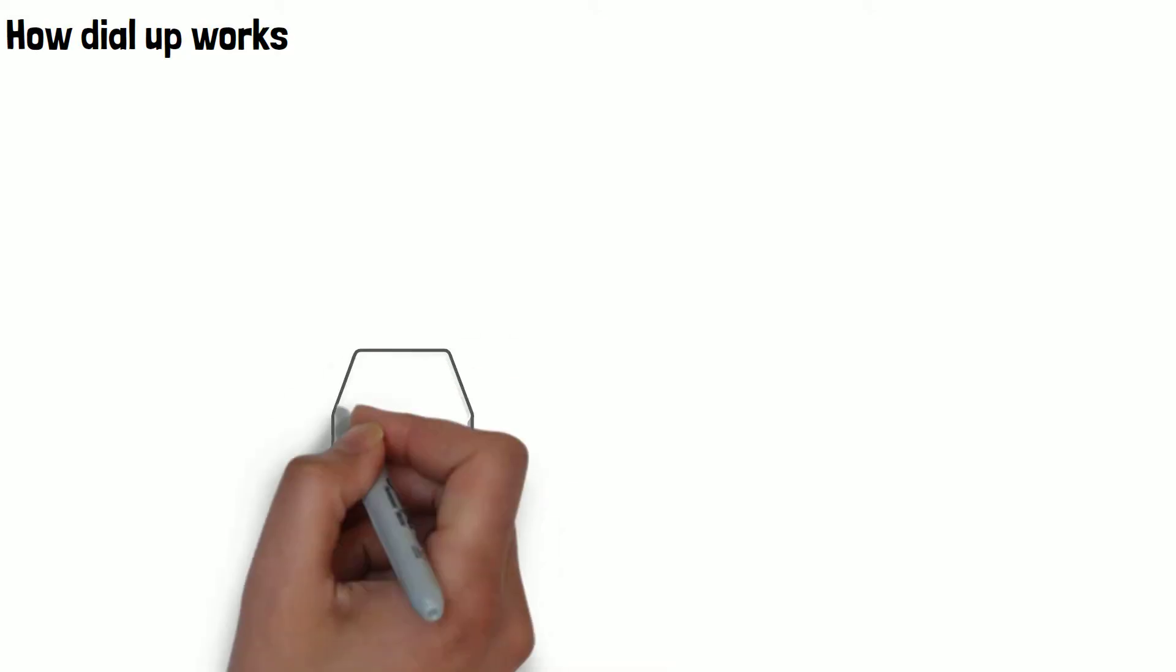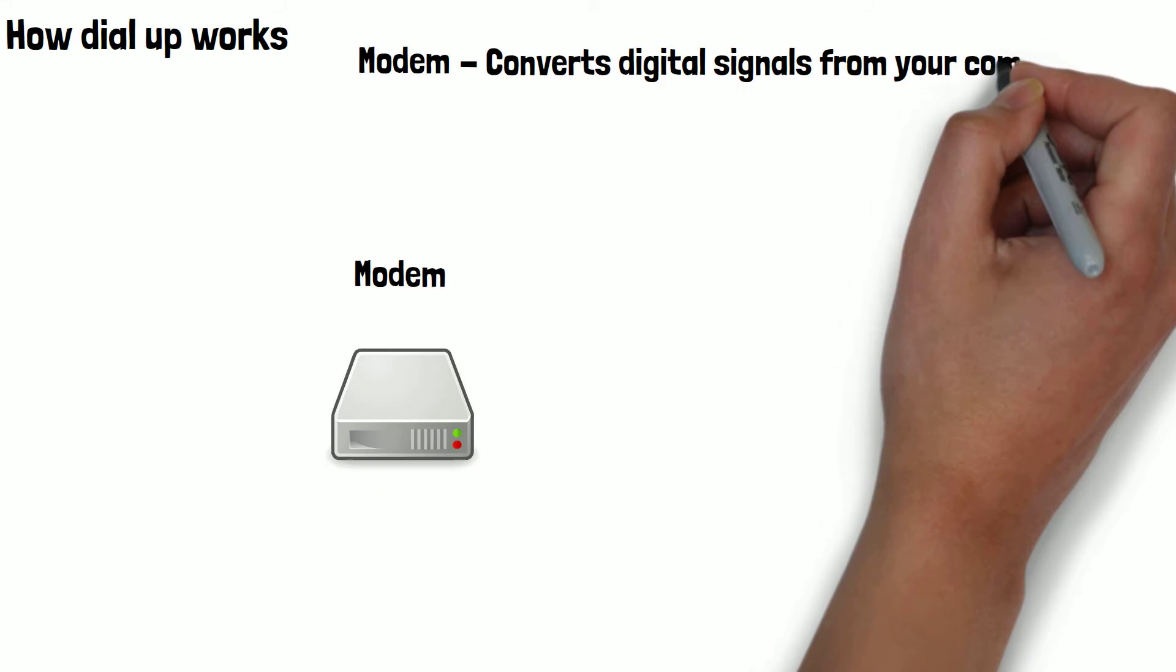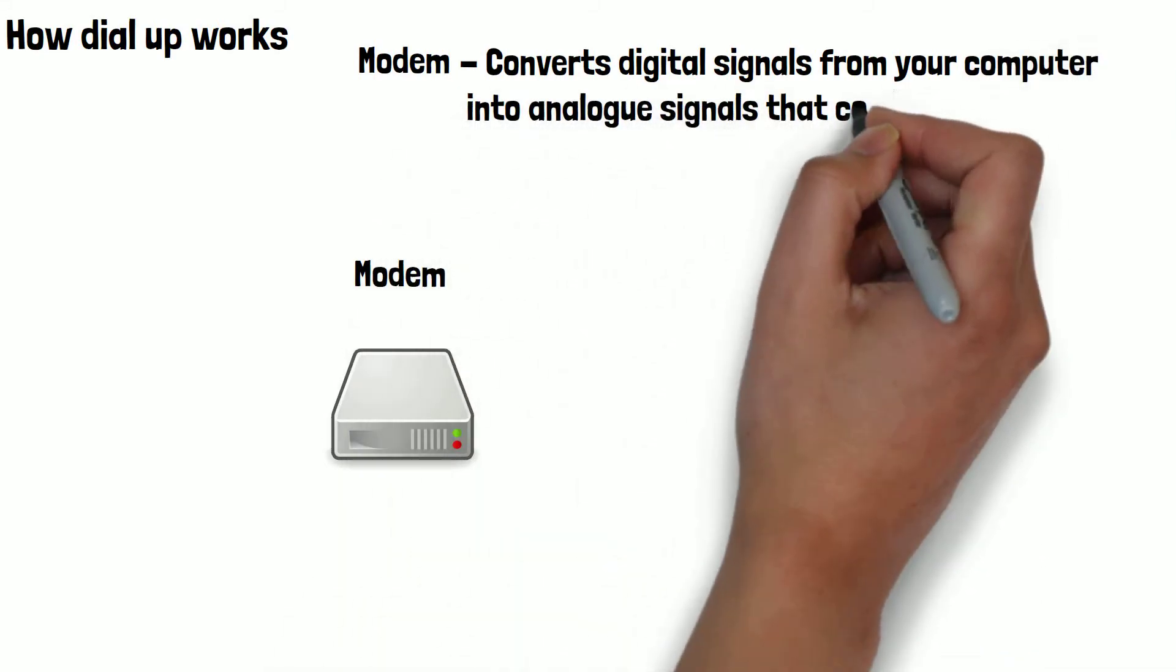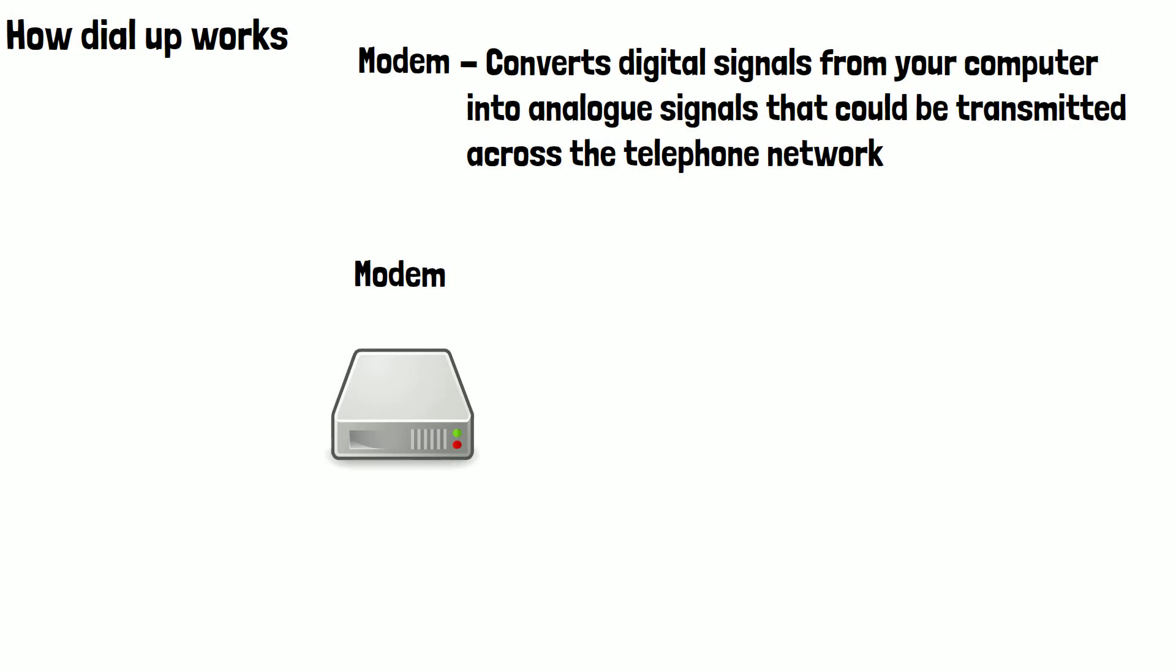Before broadband and Wi-Fi, dial-up was the main method of connecting to the internet. Dial-up used a device called a modem to convert digital signals from your computer into analog signals that could be transmitted across the telephone network, as this was the only widely available infrastructure at the time.